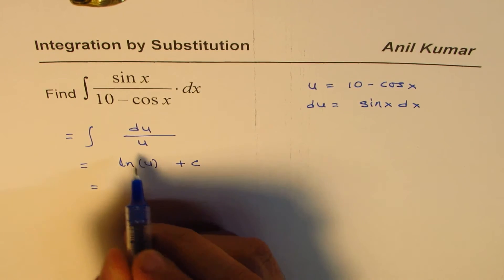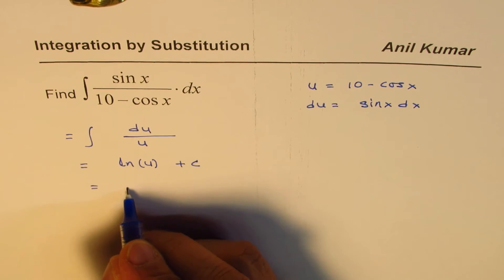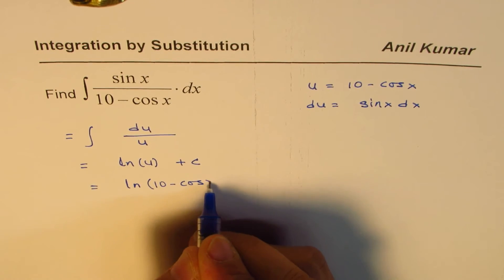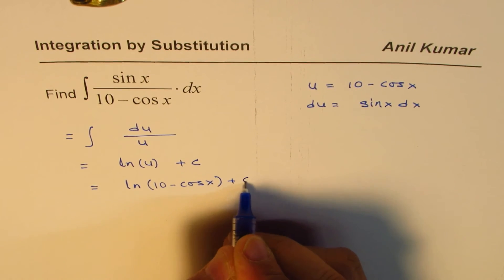Now replacing u with the given function, we get ln of 10 minus cos x plus c as the result.